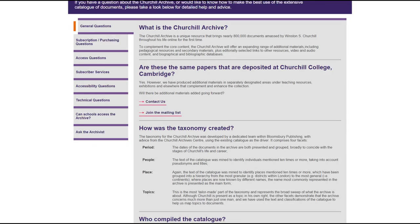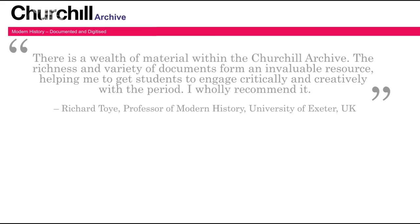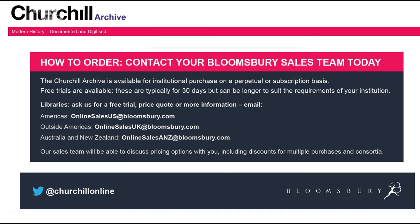The Churchill Archive is a unique digital resource, and it offers librarians a range of accompanying benefits, including counter-compliant usage stats and cross-referencing via DOIs and OpenURLs. It is available on a subscription or perpetual access basis. Here's what people are saying about the Churchill Archive. We hope you've enjoyed this brief introductory video on how to unlock the rich content in this extensive archive. If you're a librarian interested in arranging a free trial or placing an order, or if you're a researcher wanting to know more, please get in touch.